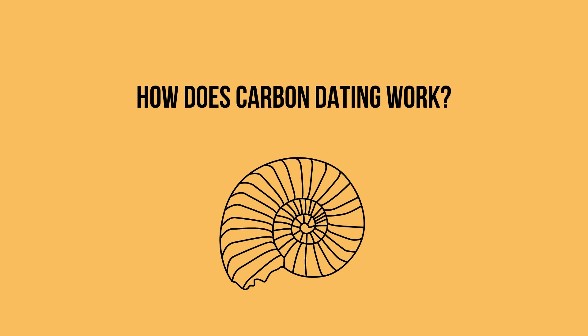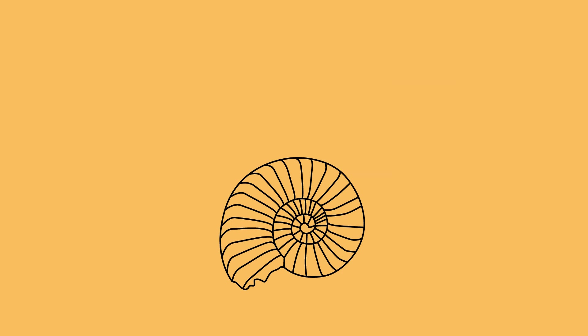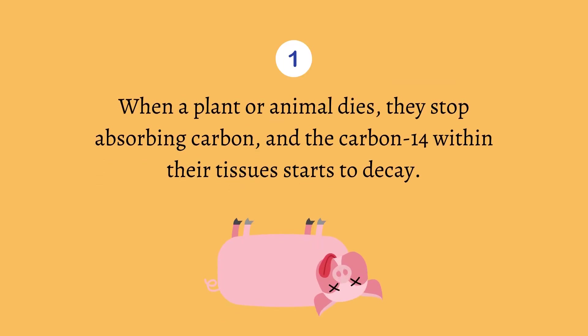Then how does carbon dating work? First, when a plant or animal dies, they stop absorbing carbon, and the carbon-14 within their tissues starts to decay.